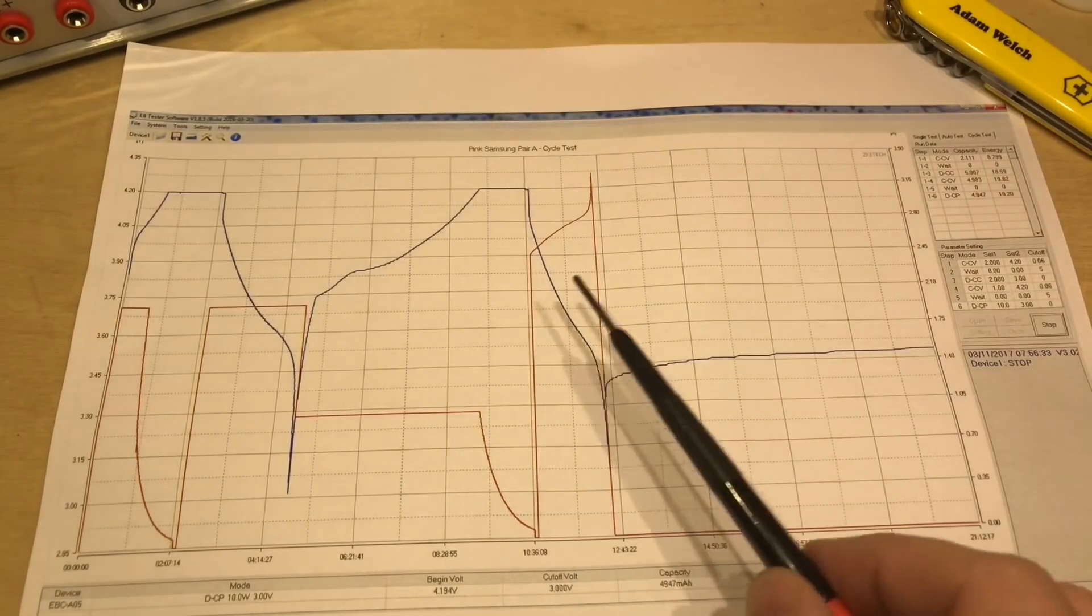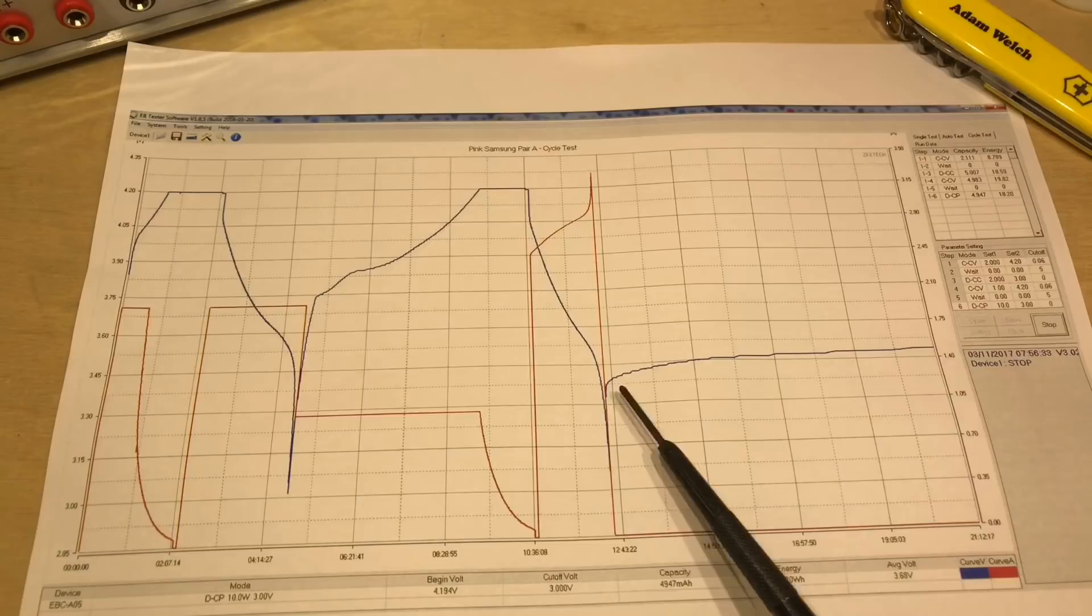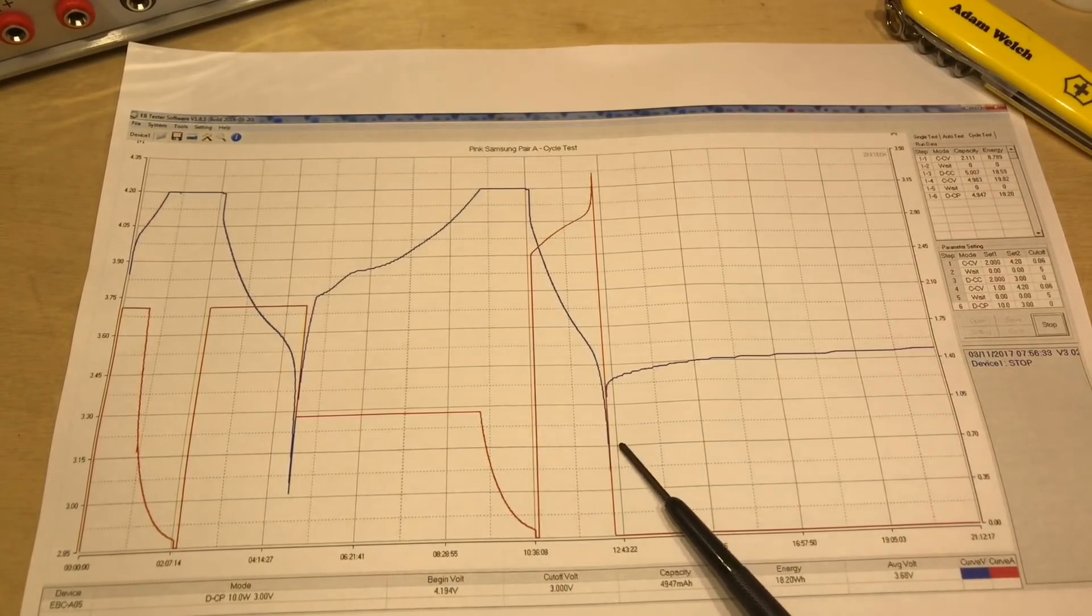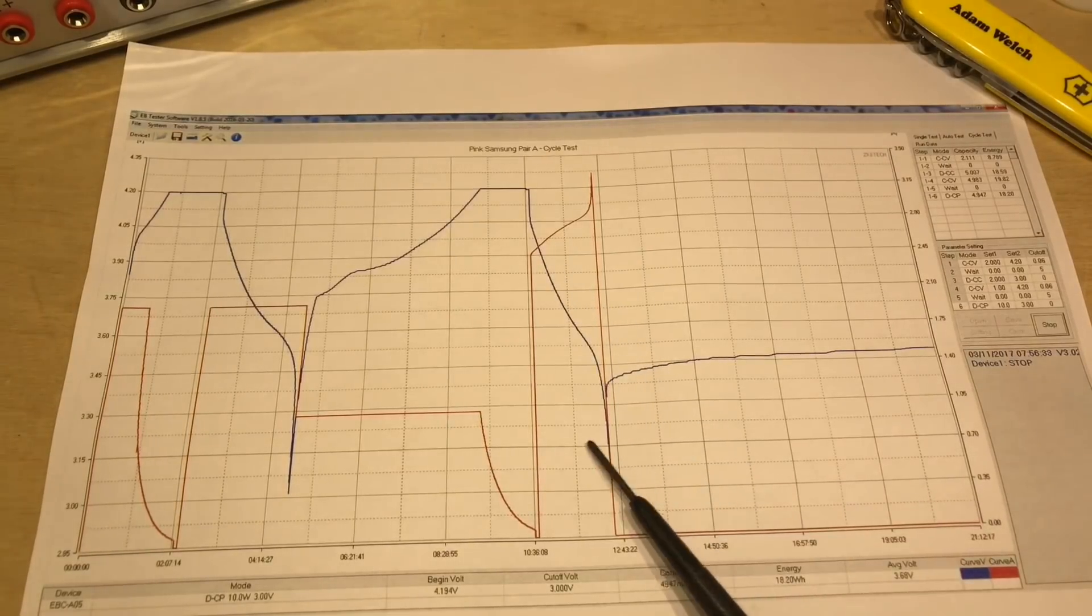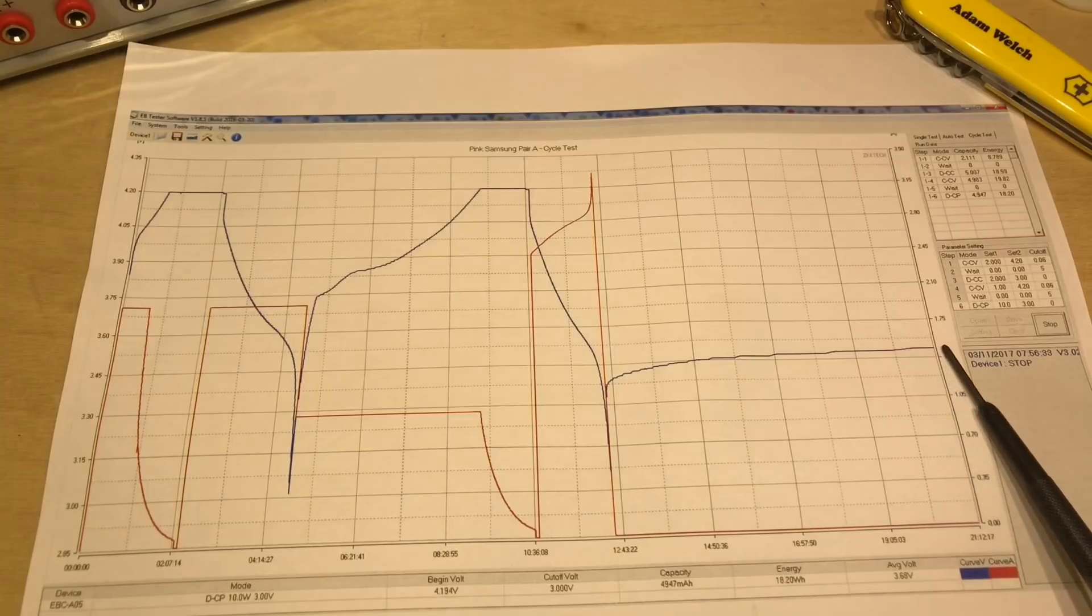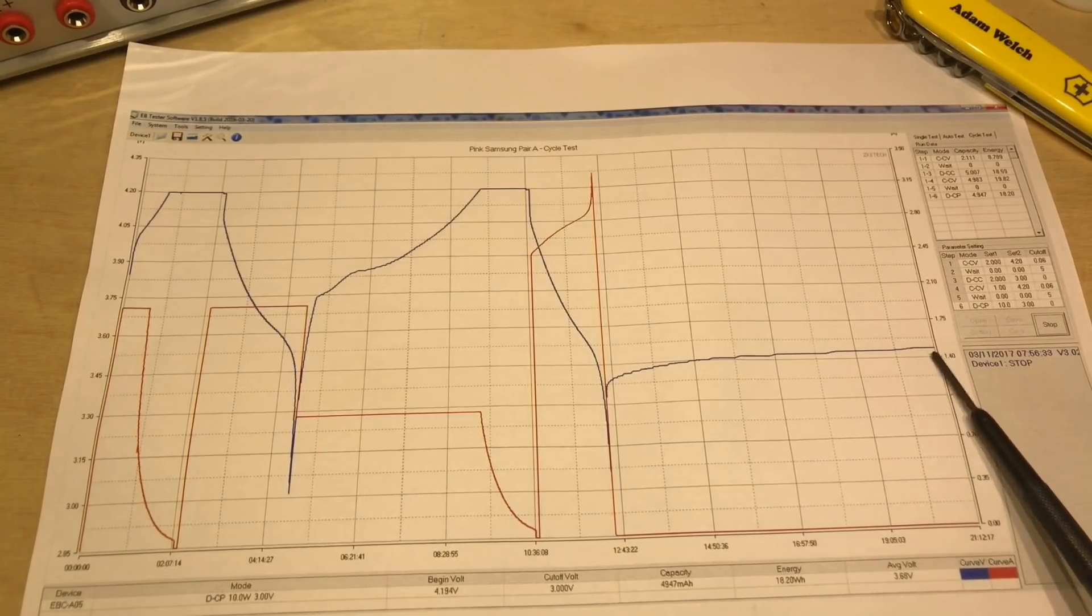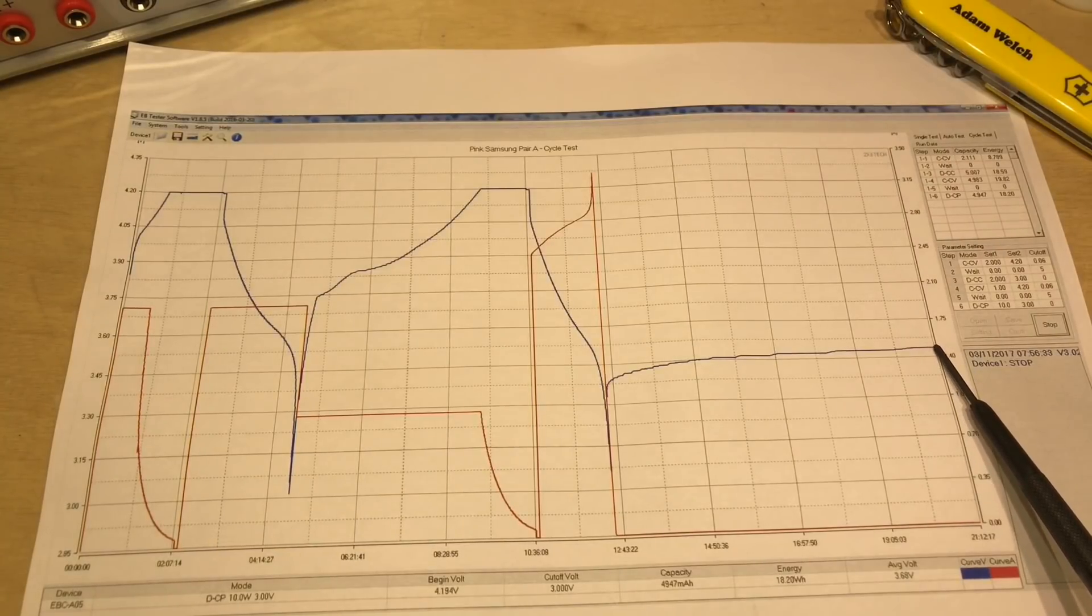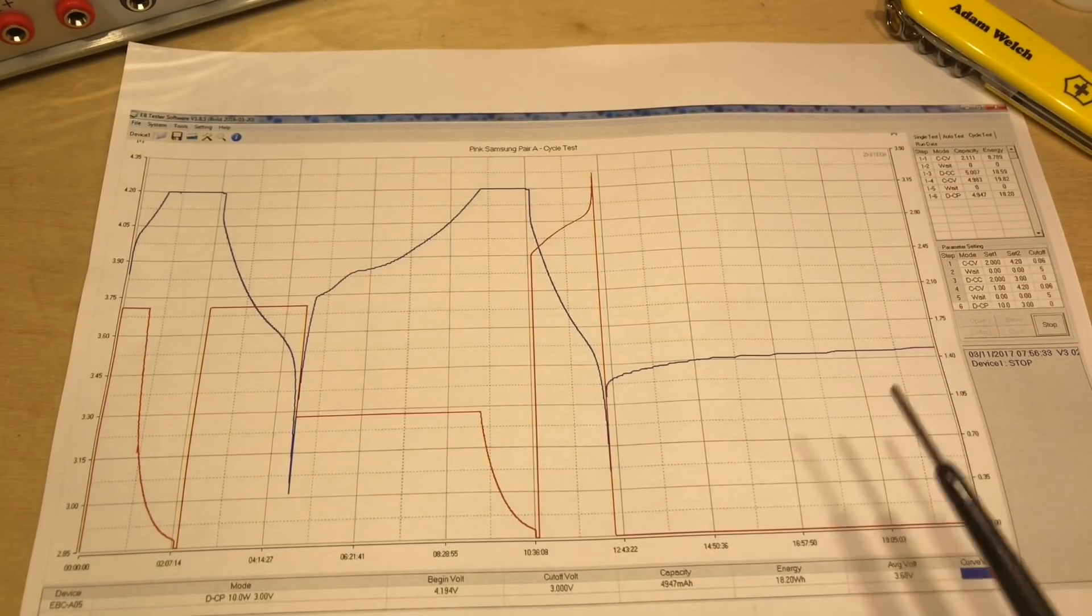We can then see that this actually completed overnight, and I didn't get to stop the graph for some hours. But we can see the voltage did, the discharge sorry did stop at 3 volts, but the voltage did recover over those few hours afterwards and finally rested at just under 3.5 volts.